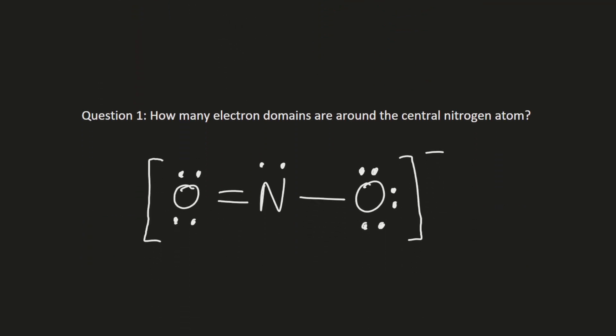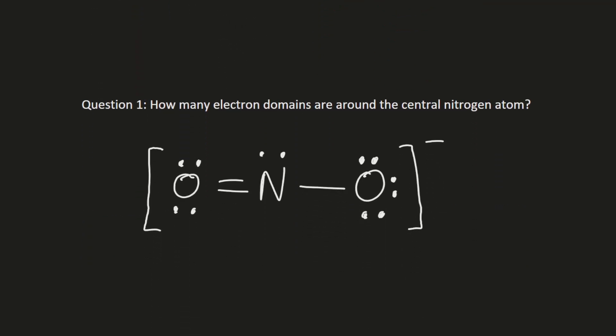Okay, quick knowledge check. Look at the Lewis structure of NO2-. How many electron domains are around the central atom nitrogen? Pause the video to give yourself some time. Here we can see that the central atom is indeed nitrogen, and around the nitrogen atom are two atoms of oxygen which are attached to the nitrogen through bonds. For the oxygen on the left, we can see that there is a double bond of electrons, which only counts as one electron domain.